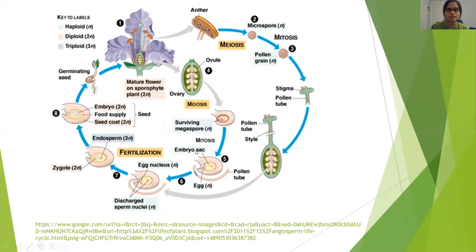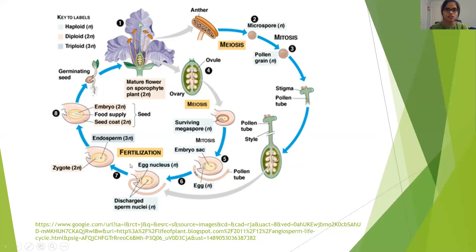The life cycle of Mentha piperita begins with the male and female reproductive parts of the flower. The male reproductive part is the stamen and the female reproductive part is the pistil, including the ovary. During meiosis, the stamen gives rise to a microspore and the ovary gives rise to a megaspore. When the microspore undergoes meiosis, it gives rise to a pollen grain. The megaspore undergoes meiosis to give rise to an egg, with a pollen tube. The pollen grain enters the pollen tube and fertilization occurs, giving rise to a diploid zygote.